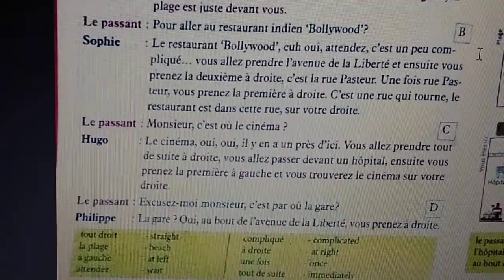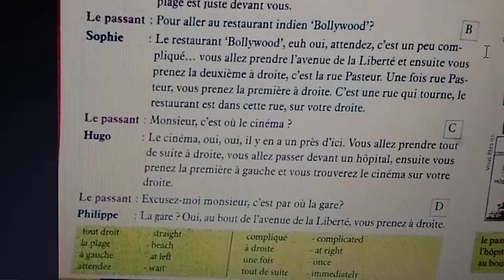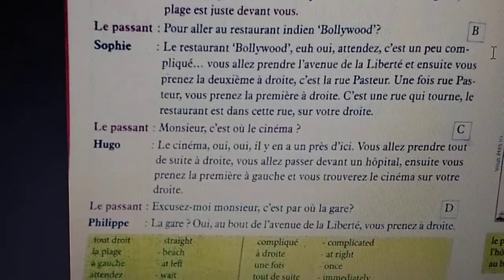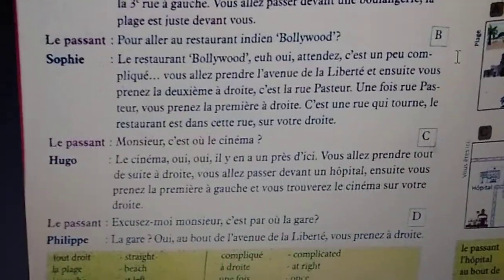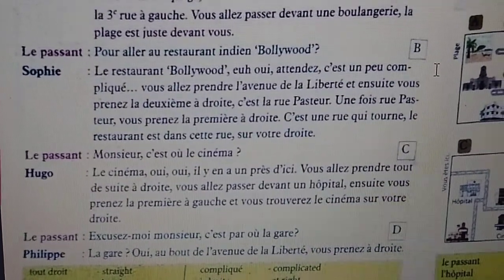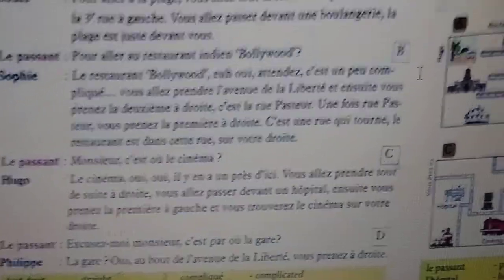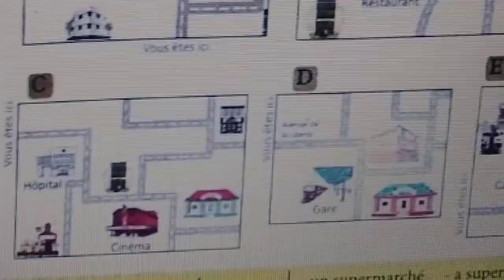Next dialogue. Le passant: excusez-moi, monsieur, c'est où la gare? Philippe: la gare, oui, au bout de l'avenue de la liberté, vous prenez à droite. The passer-by is looking for the train station. Philippe is helping: yes, at the end of the Avenue de la Liberté, you will take a right. I can show you image number four.